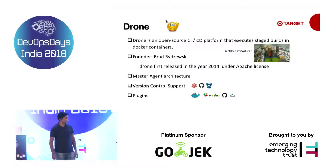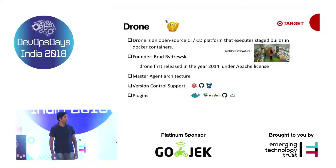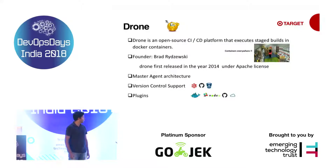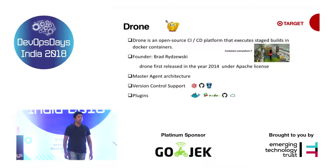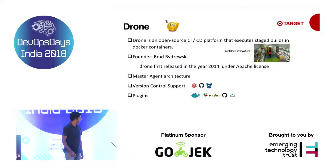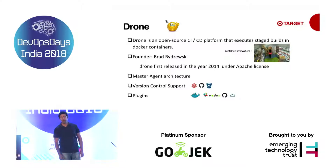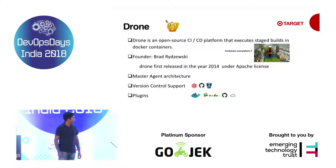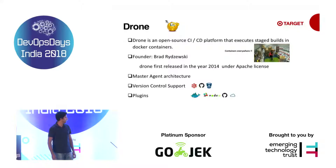Drone has a master-agent architecture: the master exposes the APIs and shows the UI. The agent is a worker node which connects to the master, takes in the job specs, executes them, and returns the results back to the Drone master. You can also easily spin up Drone in a Kubernetes cluster using Helm charts.